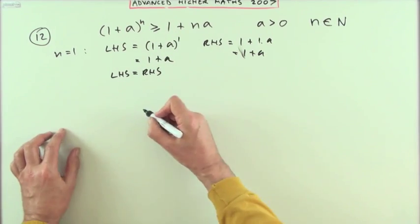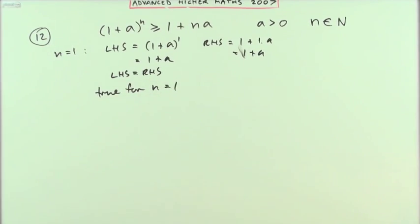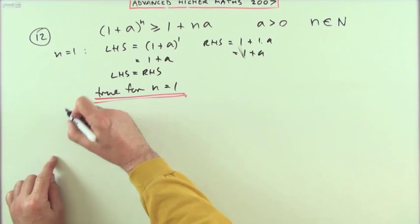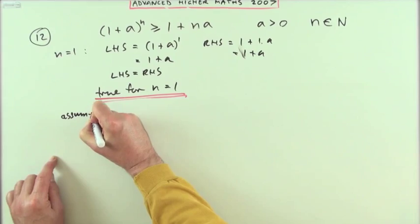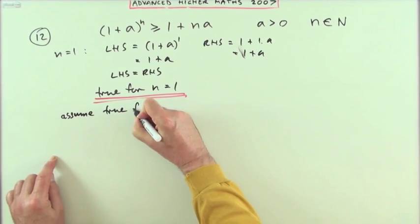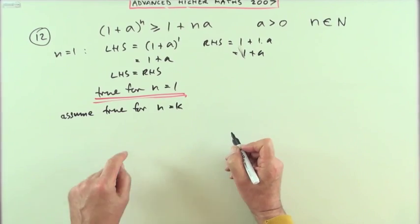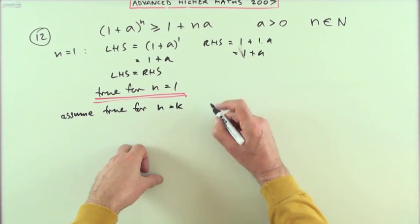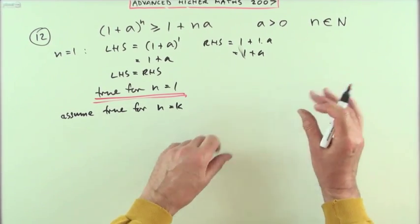So true for n equals 1. Now we've got that part, then we're going to do this: we're going to assume it's true for some arbitrary number n equals k. Not saying it is true, just saying what if it were true.